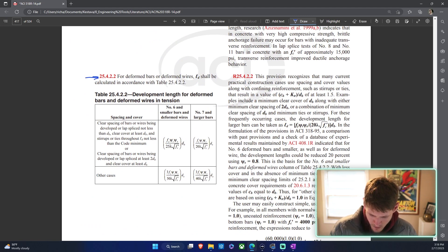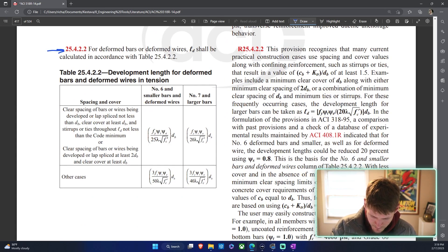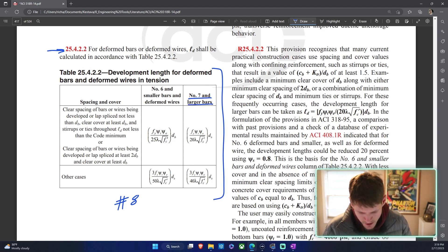That lands us 25.4.2.2 and we find ourselves in this table. If we remember from the previous videos, we are working with number eight bar that we're trying to develop. So we are number seven bars and larger, pretty easy. And then you have two criteria here: clear spacing of bars or wires being developed or lap spliced not less than the diameter of bar.